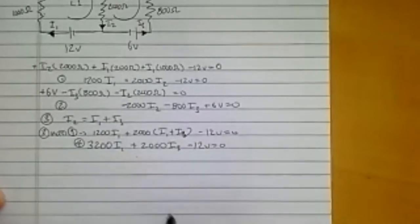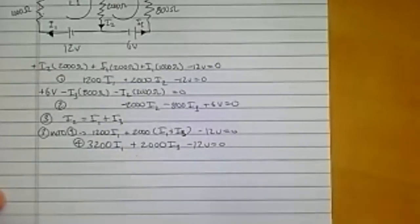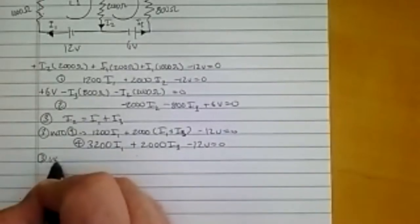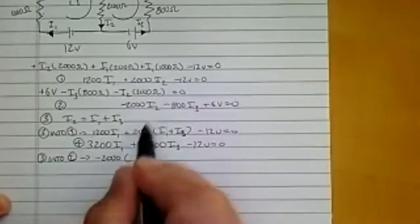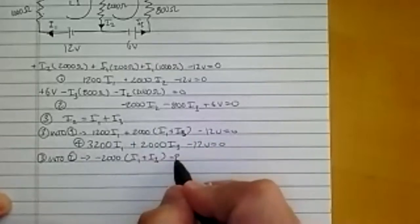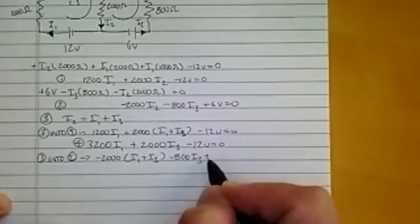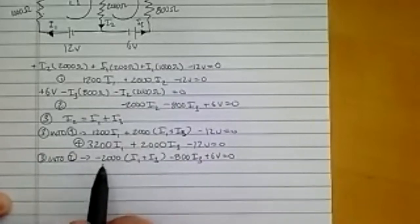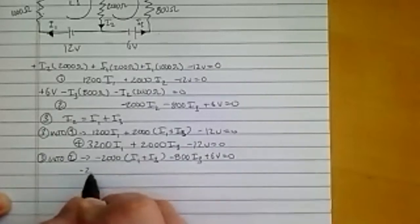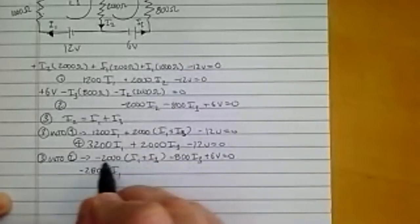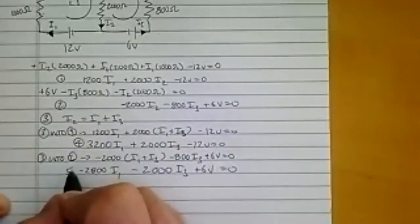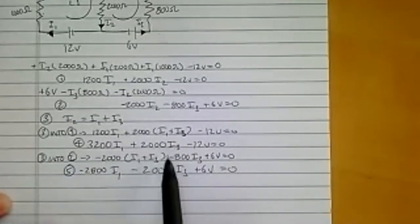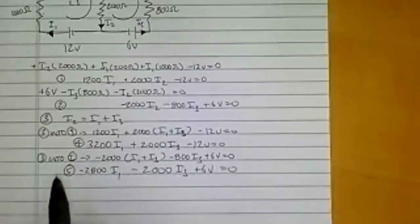Now I'm going to plug three into equation two and from that one I'm going to get minus 2000 times, in place of I2 I'm going to put I1 plus I3, minus 800 I3 plus 6 volts equals zero. Again I can simplify. I have a minus 2000 I1 and a minus 800 I3. So I'm going to say this is minus 2800 I1 and then minus 2000 I3 and then plus 6 volts is equal to zero, and I'm going to call this equation five. Now you might notice this I3 term in four and this I3 term in five are equal in magnitude and opposite in sign, so that tells me the smartest way to actually solve the system is to add the two equations.